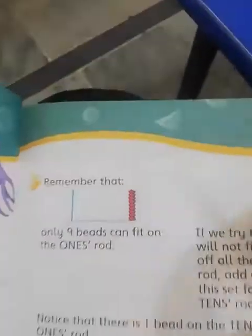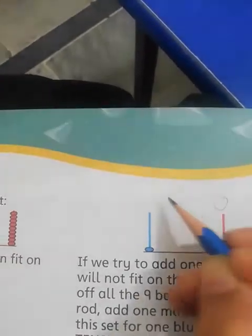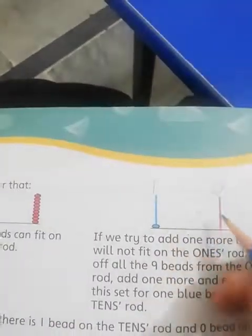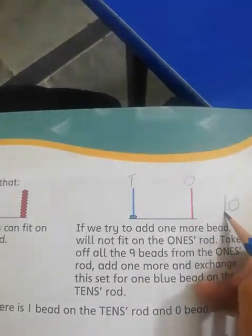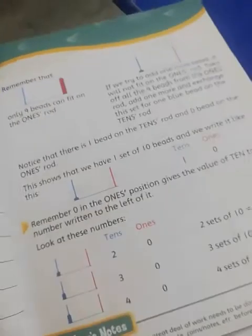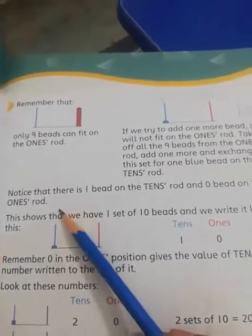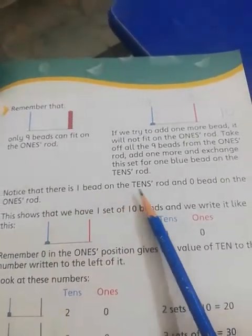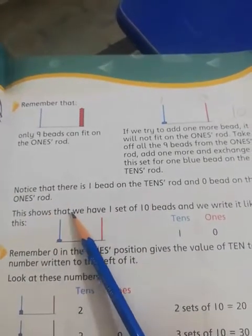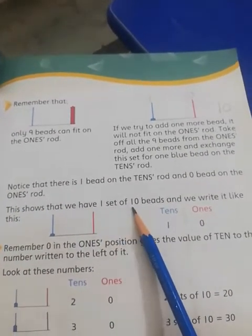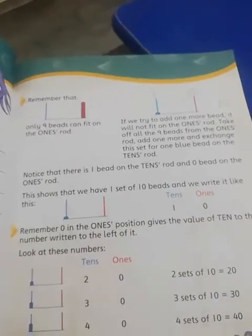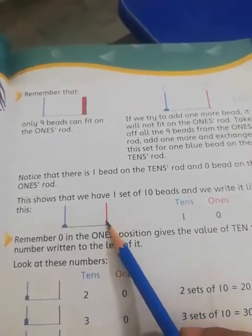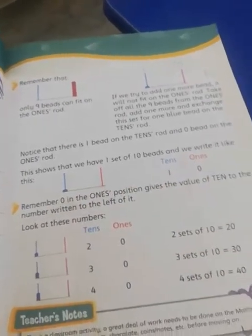You have to write and read this. In tens, you put tens like this — ones and tens. In ones there is nothing, so it is zero. What is tens? One digit higher — it means ten. Notice that there is one bead on the tens rod and zero beads on the ones rod. This shows we have one set of ten beads, and we write it like this: ones is 0 and tens is 1, so 1 and 0 makes 10.